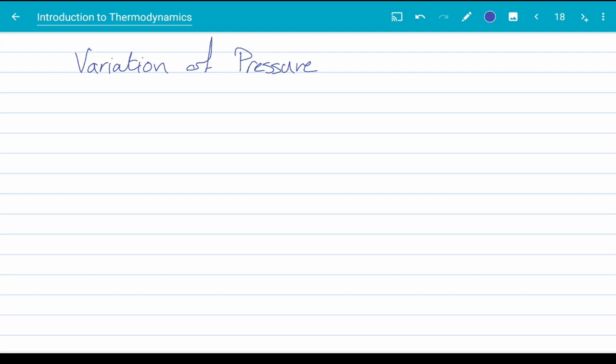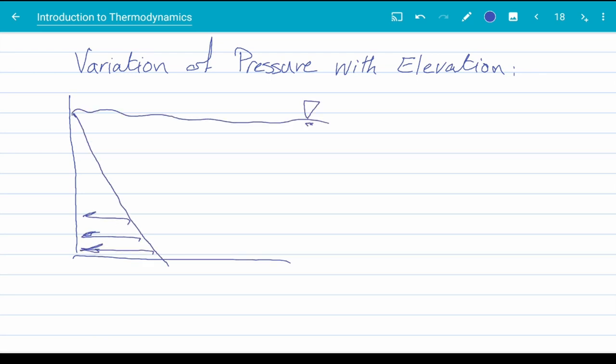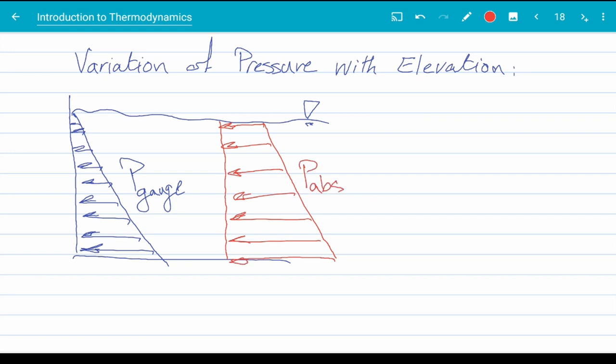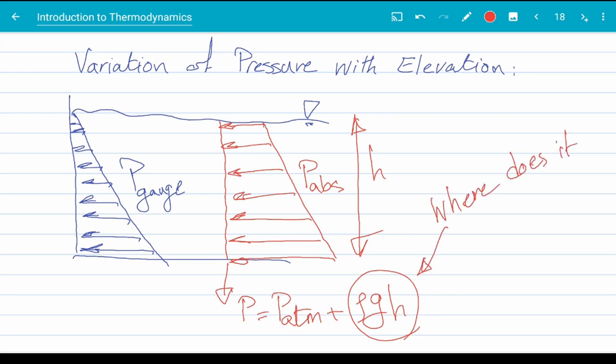Now, moving on, how does pressure change with elevation inside a fluid? Consider a container full of a fluid like this. The blue diagram represents the variation of gauge pressure and shows a linear increase with respect to elevation. The red diagram, on the other hand, shows the absolute pressure and again shows a linear increase. We know from general physics or high school physics that the pressure increases as density times gravitational acceleration times the height of the column of the liquid. But why?